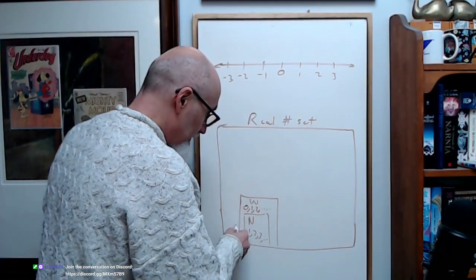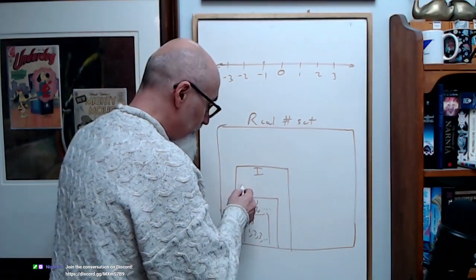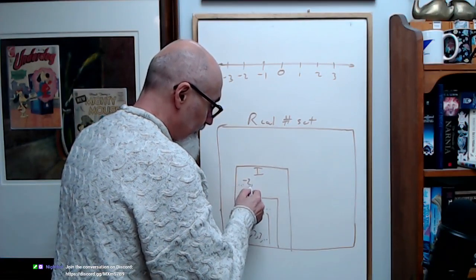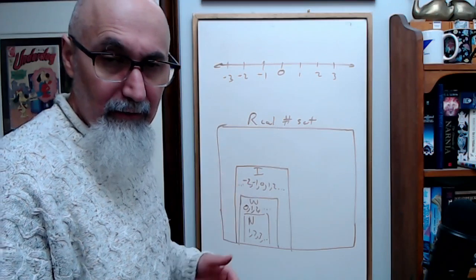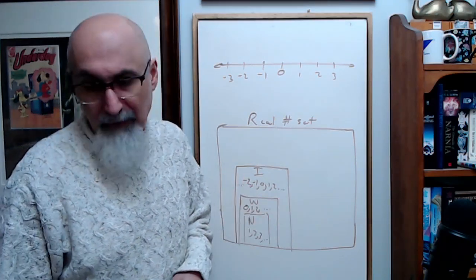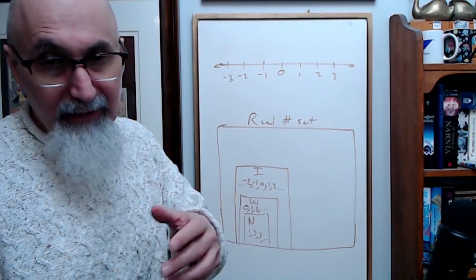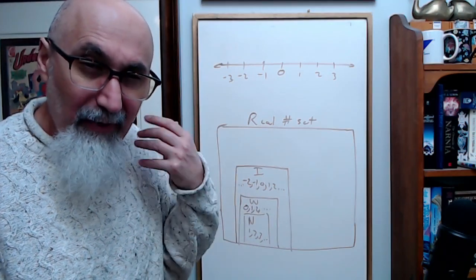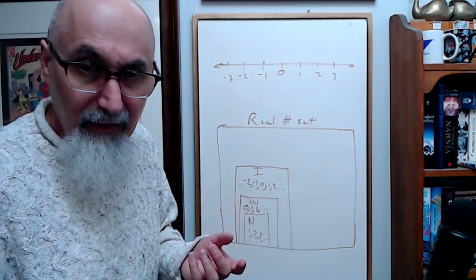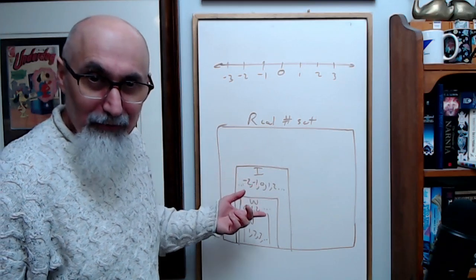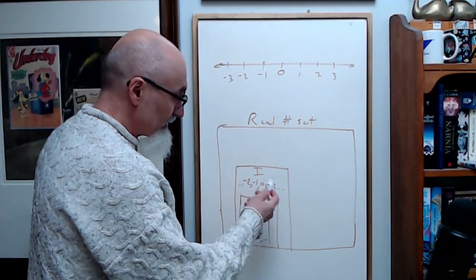Later, integers were defined — basically positive and negative whole numbers: negative two, negative one, zero, one, two, and so on. This was another leap in evolution, like discovering the wheel. People talk about the greatest discoveries in human history — the computer, and so on — but the two greatest were really fire and the wheel.